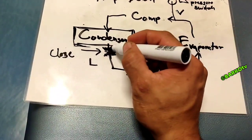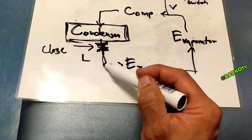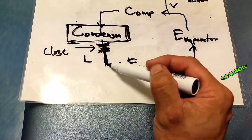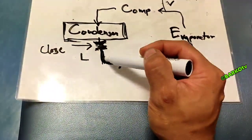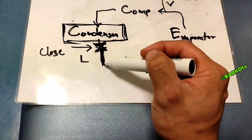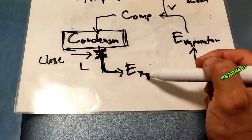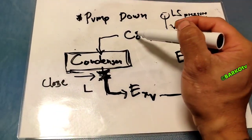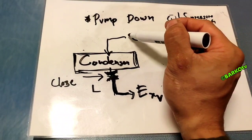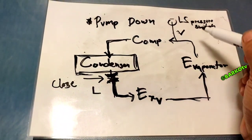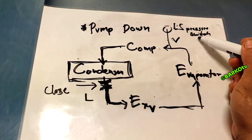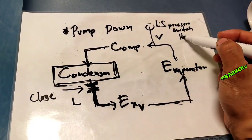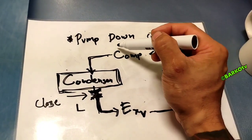Starting with your isolating valve — this one — if you close this valve, you start pumping down. That pipe goes to the expansion valve, then to the evaporator, then the suction brings it to the compressor, and then it goes to the condenser. The refrigerant starts collecting in the condenser.